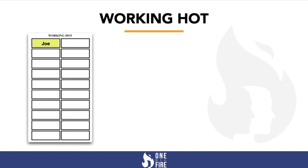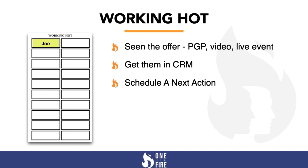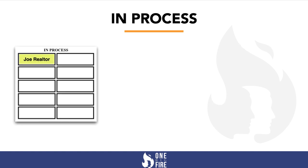Your working hot is made up of agents that have seen the offer — they've been on a private group presentation (a PGP), watched the video, or attended a live event. You want to get them in your CRM with a next action date scheduled, send them content for consumption, and your goal is to invite them to a three-way call to answer their questions and determine next steps.